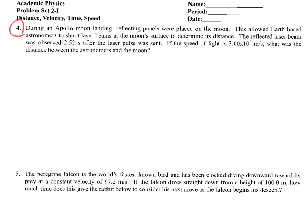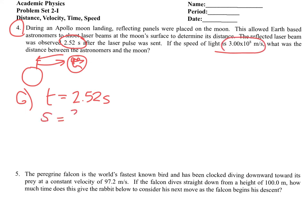During an Apollo moon landing, reflecting panels were placed on the moon. This allowed Earth-based astronomers to shoot laser beams at the moon's surface to determine its distance. The reflected laser beam was observed at 2.52 seconds after the laser pulse was sent. So here's Earth, here's the pockmarked moon—we're going to shoot that laser and it's going to come back to us. That happened in the given time of 2.52 seconds. If we know the speed of light is 3 times 10 to the 8th meters per second, that's a speed given to us—300 million meters per second. That's pretty fast.